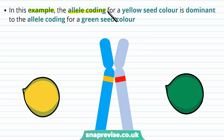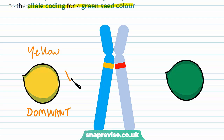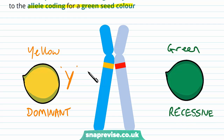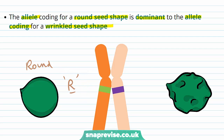The allele coding for yellow seed colour is dominant to the allele coding for green. So if the seed is yellow it inherits a dominant allele, which we give a capital Y. If the seed colour is green, it's recessive, so we use a lowercase y. For seed shape, the allele coding for round is dominant to the allele coding for wrinkled. So for a round shape we use uppercase R, and for the wrinkled seed we use lowercase r.